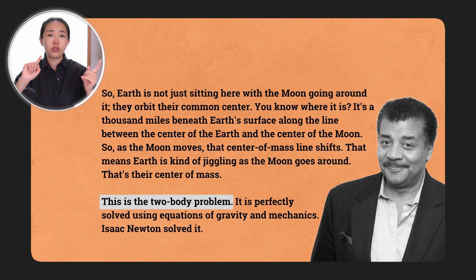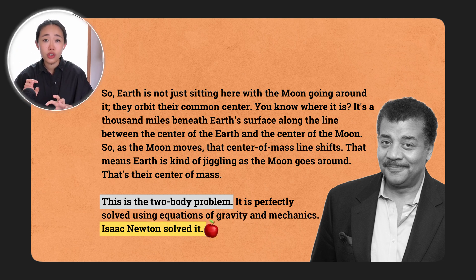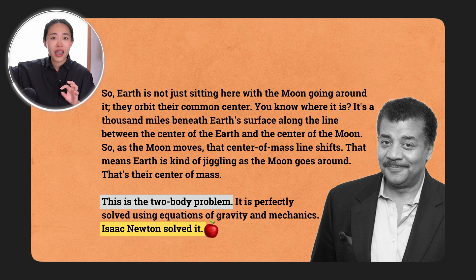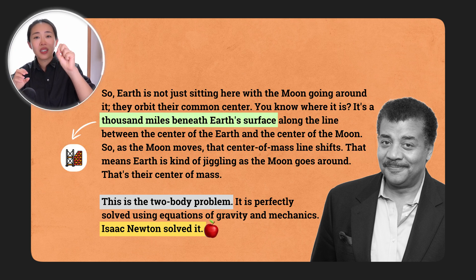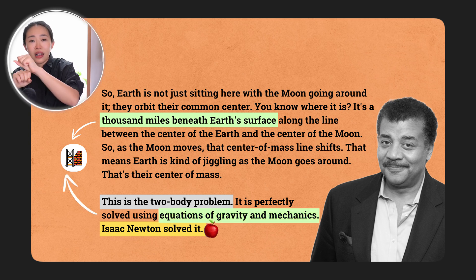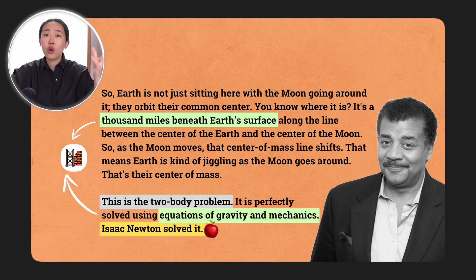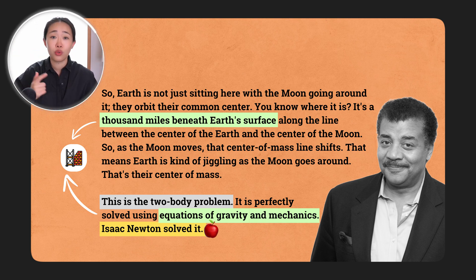It's the same when he evokes Newton. We've talked about the two body problem involving stars and how they orbit each other. As soon as he introduces Newton, we realize this is related to gravity — the apple falling on Newton's head, then equations. He's bringing in space elements, gravity elements, and motion elements, and hooking new information onto things we already know, which helps us understand even more new information.